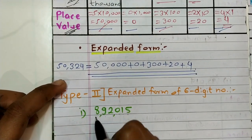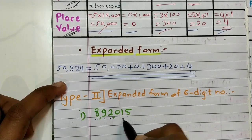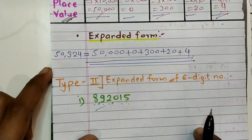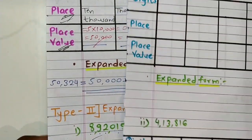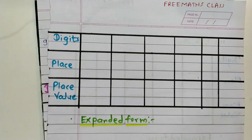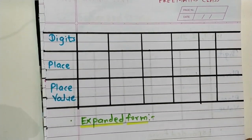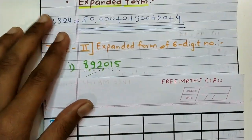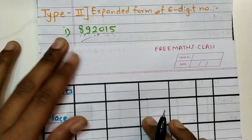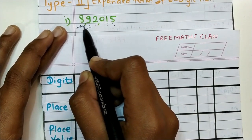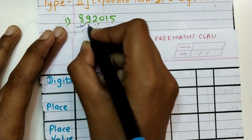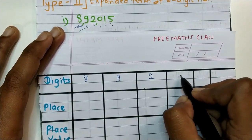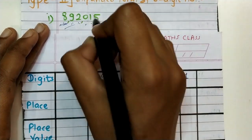8,92,015 — we need to write this in expanded form. Firstly in the column we fill the digits present in the number. First digit is eight, second is nine, third is two, fourth digit is zero, fifth digit is one, and last digit is five.